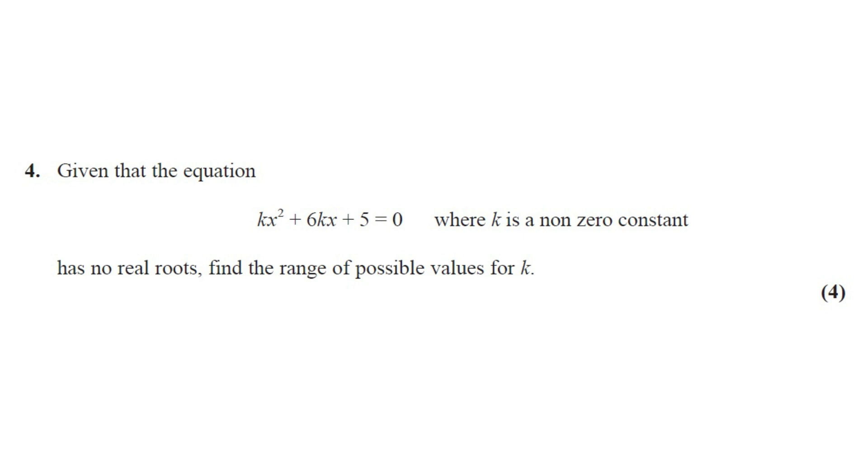Question number four. Given that the equation kx square plus 6kx plus 5 equals 0, where k is a non-zero constant, has no real roots, find the range of possible values of k. This question got four marks.